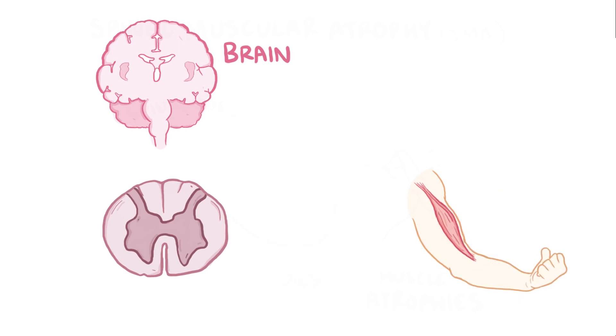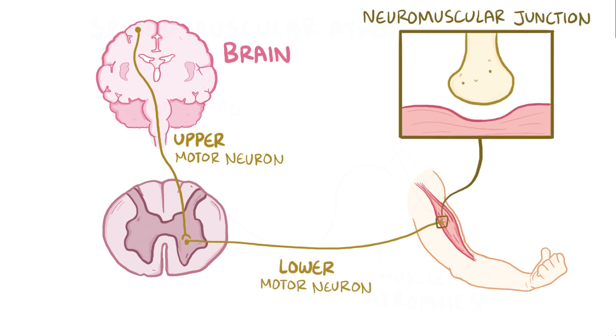When the brain wants a muscle to contract, it sends a signal through an upper motor neuron, which takes the impulse from the brain to the spinal cord, and then through a lower motor neuron, which goes from the spinal cord to the neuromuscular junction, which is where the lower motor neuron touches the muscle cell.